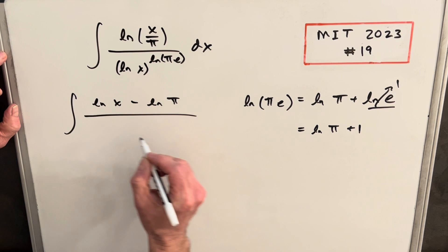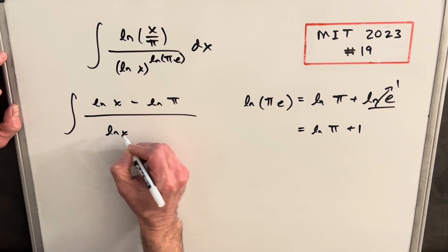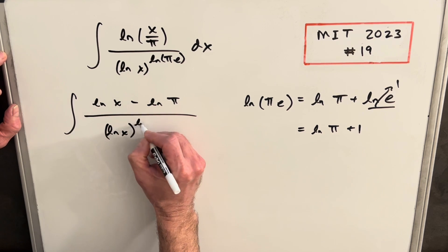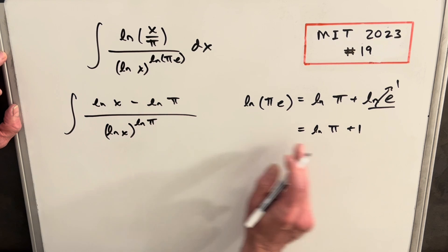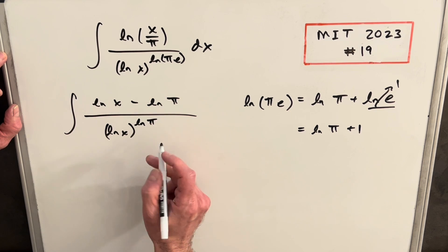So then our exponent here is just going to be ln π plus one. So then when I rewrite my denominator, we'll have our ln x. So then I'm going to write it to ln π. But instead of writing it ln π plus one, one is just another ln x.